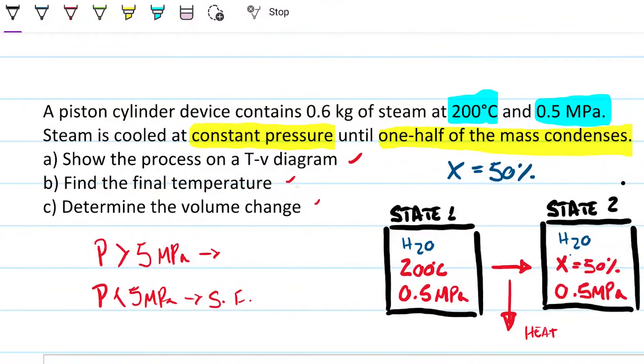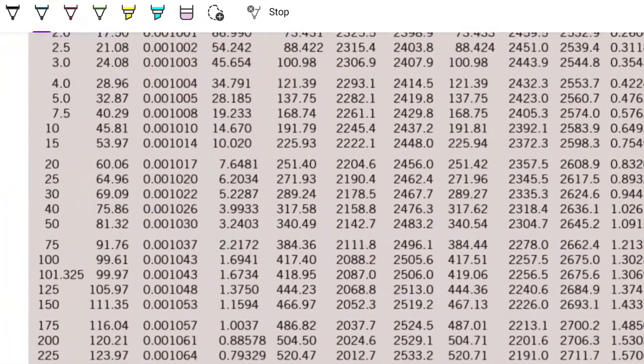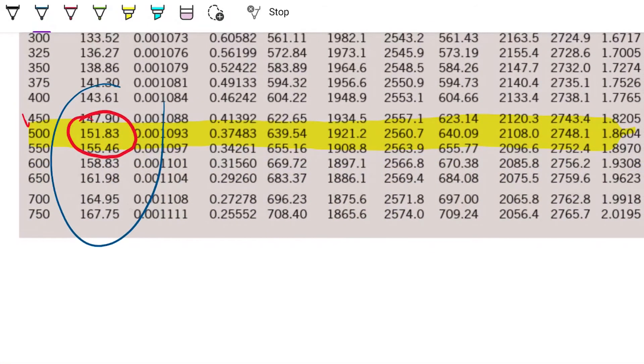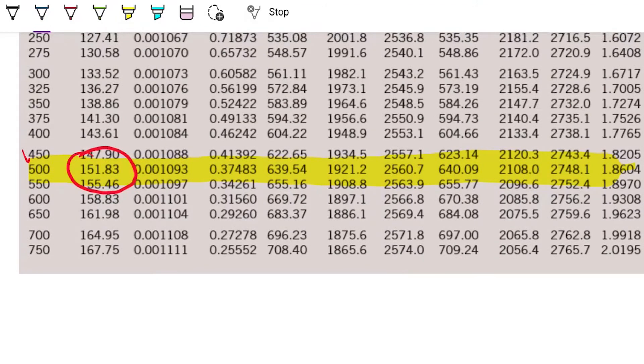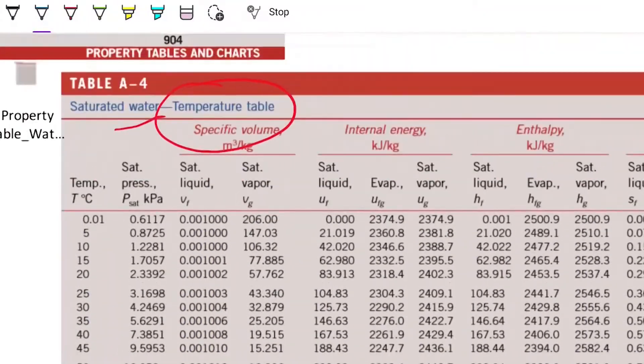Part B, find the final temperature we just did. 151.83. And we know that's the final temperature because we are at 0.5 MPa the whole time. And we know the second state is a saturated mixture because it has 50-50. So it has to be a saturated mixture. Because it has to be a saturated mixture, the temperature has to be the saturation temperature. So 151.83 is the answer for part B.